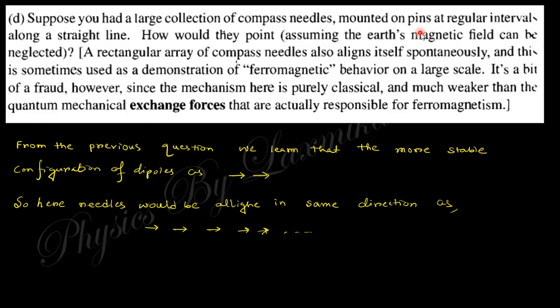Suppose you have a large collection of compass needles mounted on pins at regular intervals on a straight line — how will they point? From the previous result, the most stable configuration is configuration 1, so if you freely place the needles, they will arrange themselves in that most stable configuration.